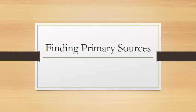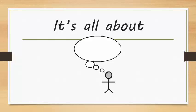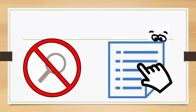So you have been tasked with locating and analyzing a primary source. Now that you know what a primary source is, how do you go about finding one? The first step in primary source research is to change your mindset. Primary source research is not about searching, it's about browsing.